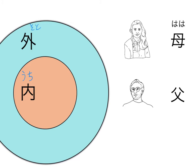So when you say haha, it's like in English saying my mother. It's always referring with humility about someone on your inside circle, your uchi, to someone outside. So when you're referring to your mother to someone outside, you will call her haha.